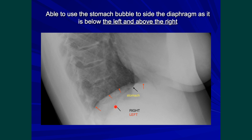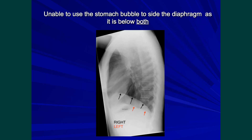The right hemidiaphragm is the diaphragm seen below the stomach. Now clearly if the stomach lies below both hemidiaphragms on the lateral film you cannot use the stomach bubble to side the diaphragm. This is illustrated in this example: the left hemidiaphragm becomes invisible as the heart shadow comes into perspective, the right hemidiaphragm is seen right across including over the heart shadow, and the stomach bubble can't be used to side the diaphragm because it is projected below both the right and left hemidiaphragms.